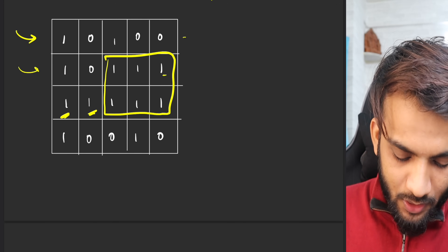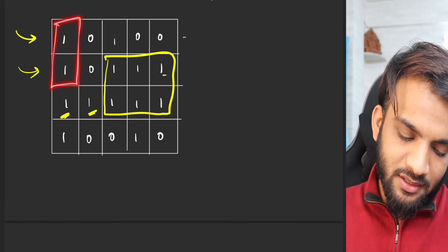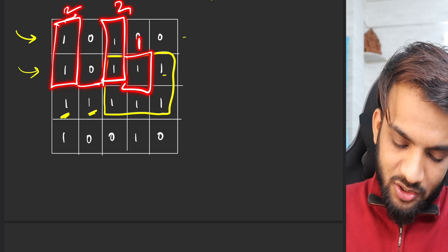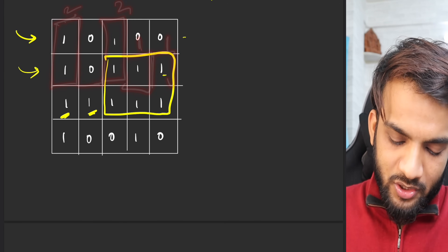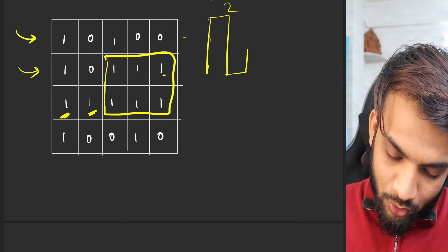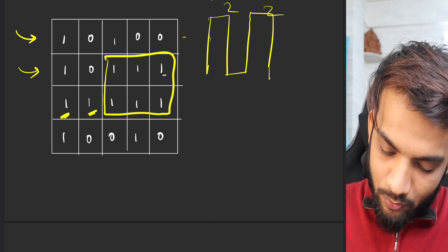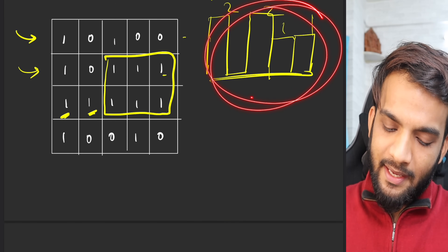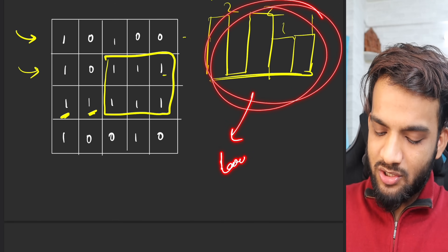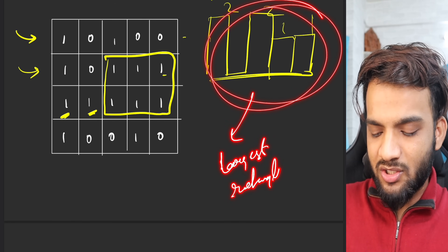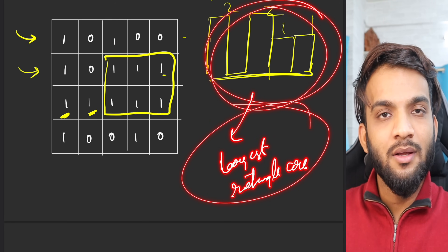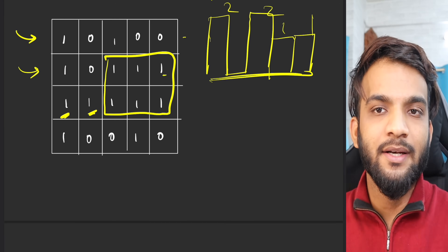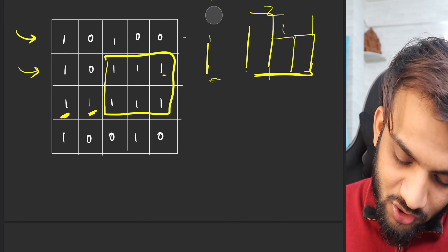Moving to the next row, can I treat it as buildings of height two, zero, two, one, one? That forms a histogram: 2, 0, 2, 1, 1. I can again find the largest rectangle area — it's the same histogram problem. I pass it to that function and get the answer.